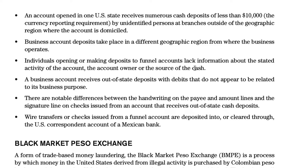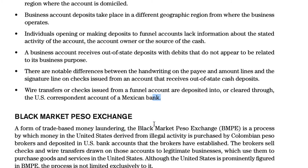Ways to identify possible funnel account activity include: an account receiving numerous cash deposits under $10,000 — the CTR reporting threshold — by unidentified persons at branches outside the account's domicile region; business account deposits occurring in a different region from where the business operates; depositors lacking information about the account owner or source of cash; out-of-state deposits with debits unrelated to the business purpose; notable differences in handwriting on payee, amount, and signature lines on checks; and wire transfers or checks from a funnel account deposited into or cleared through a U.S. correspondent bank account of a Mexican bank.